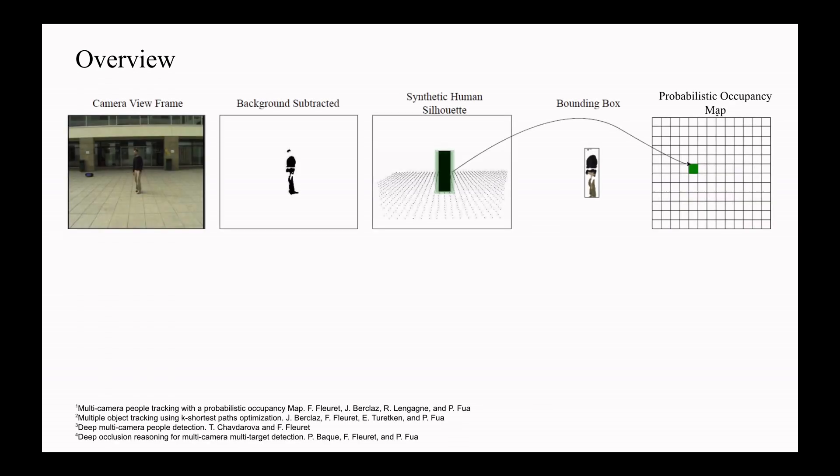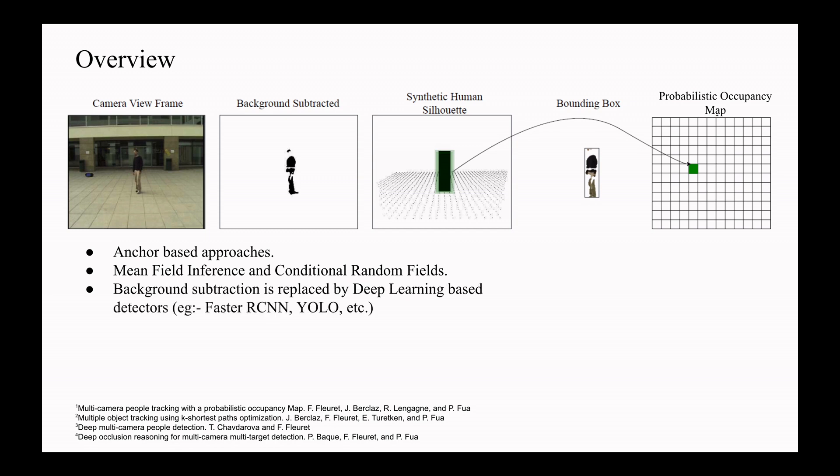Overview of multi-view pedestrian detection. Multi-camera based detection methods are divided into two categories. First is anchor-based methods. Pre-deep learning methods used background-subtracted images and represented humans as synthetic silhouettes to determine whether a person is present at a specified location. Occupancy probability was estimated using mean field inference and conditional random fields. Background-subtracted methods got replaced by deep learning-based detectors for extracting bounding boxes and feature representations.